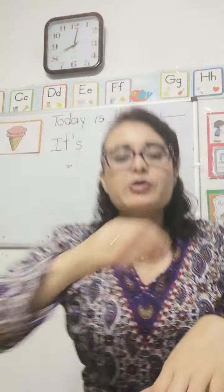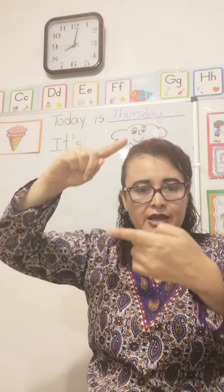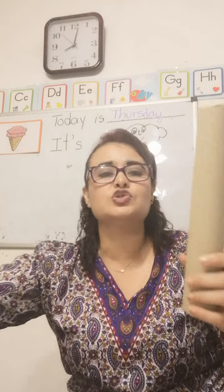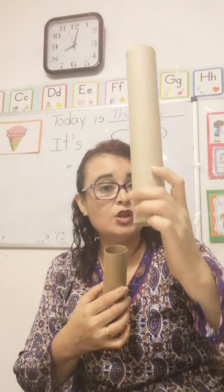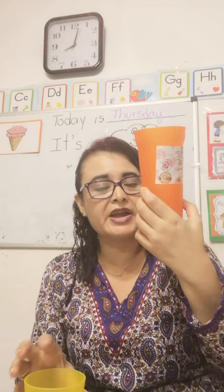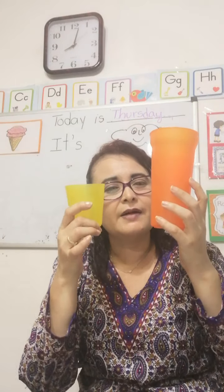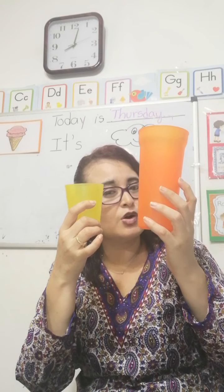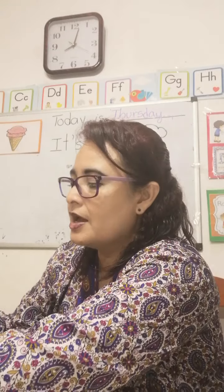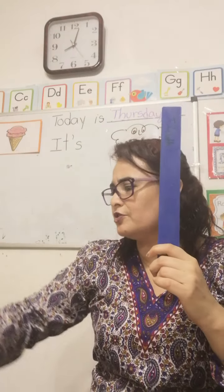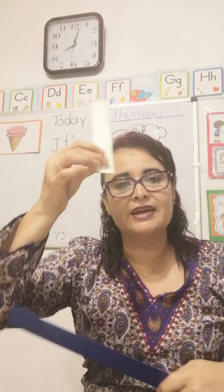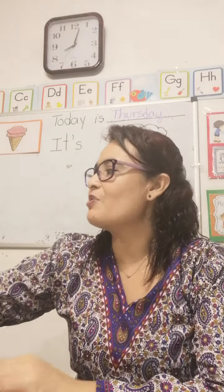In math class last week, we were talking about long and short. Remember that? So I'm going to show you some objects so you can review that at home. I have these two empty rolls of paper — this one is long and this one is short. I'm going to show you two glasses, one orange and one yellow. What is the size of the yellow one — long or short? You are right, this one is short and this one is long. And I have a blue ruler — how is this blue ruler, long or short? Tell it to your parents. This one is long and this one is short. Okay, that was our review.